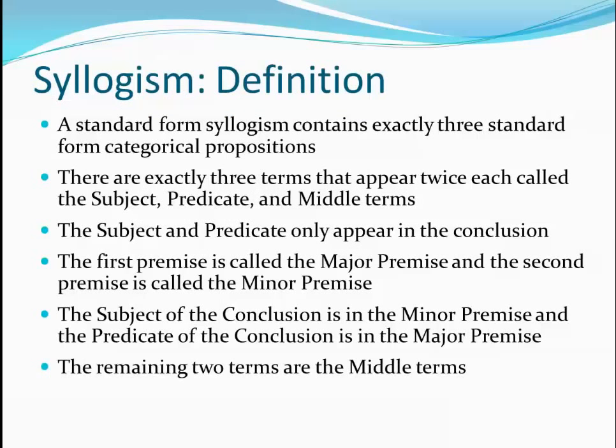Here are the rules for a standard form syllogism. A standard form syllogism contains exactly three claims. There are exactly three terms that appear twice each, called the subject, predicate, and middle terms.